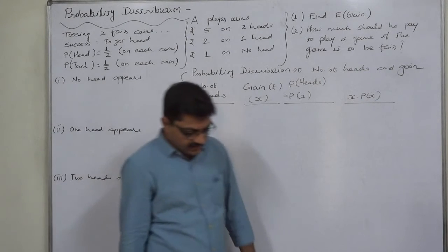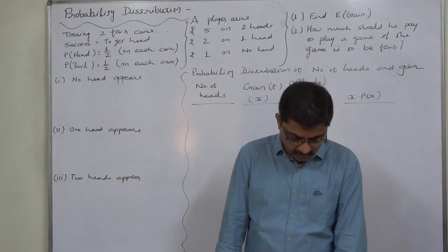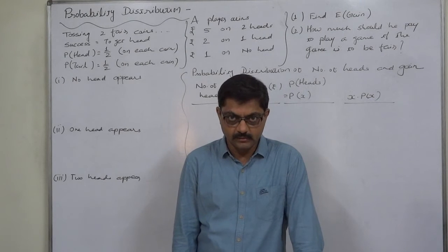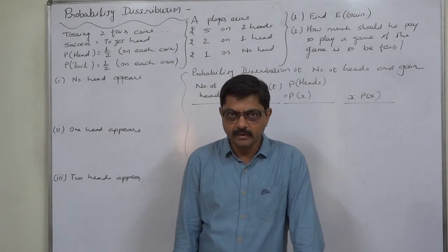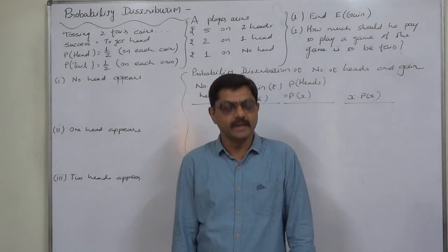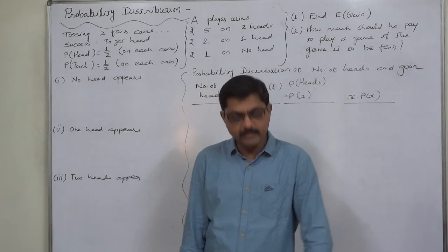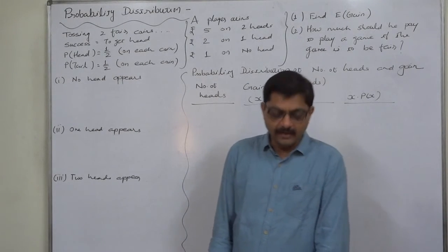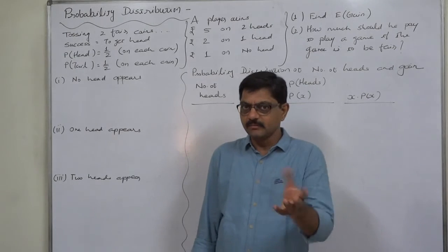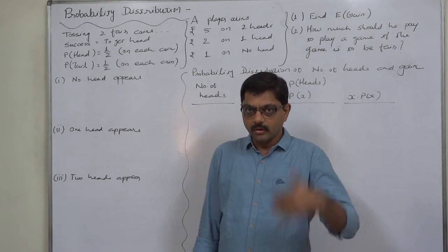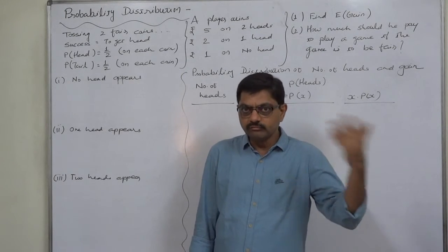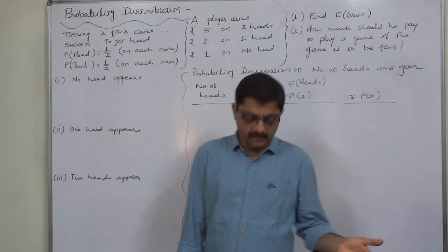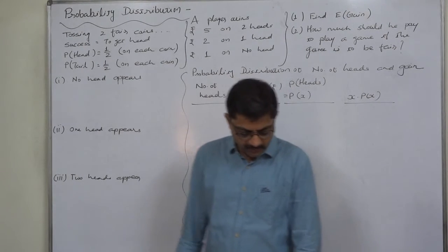The case given to us is: a player tosses two fair coins. Fair means unbiased. He wins rupees five if two heads appear. This is something like gambling or winning a monetary benefit from the game.